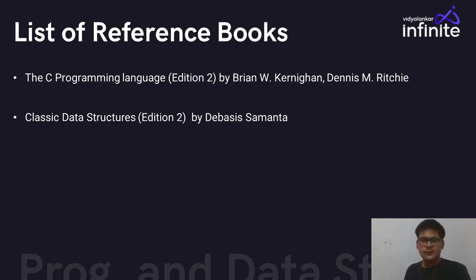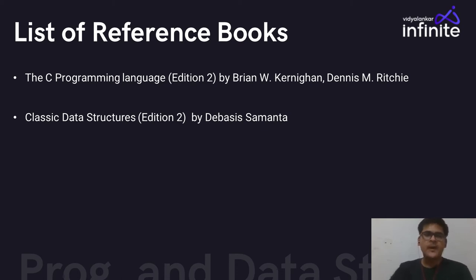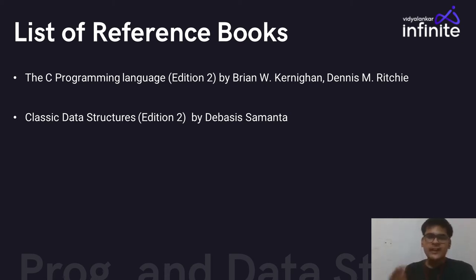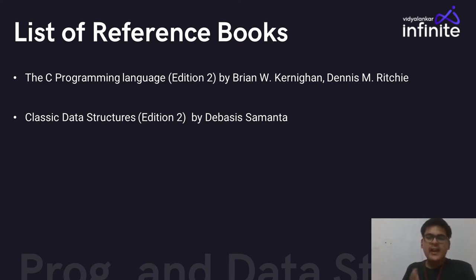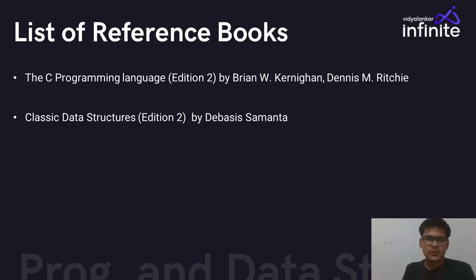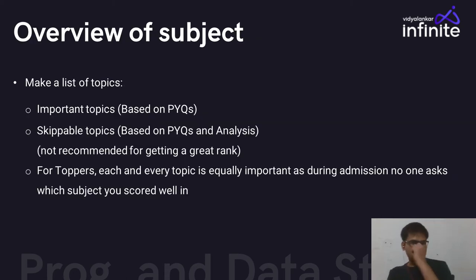Two reference books I came across during preparation are: The C Programming Language by Brian Kernighan and Dennis Ritchie, and Classic Data Structures by Debasis Samanta. I didn't refer to them much due to shortage of time — I relied on my own self-made handwritten notes. These books are of great help, but you won't get time to go through every page. Refer to your primary notes and use these books selectively for particular topics.